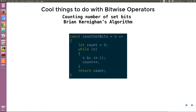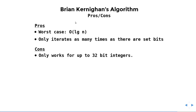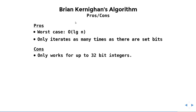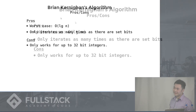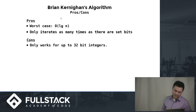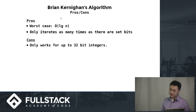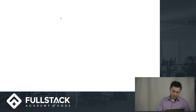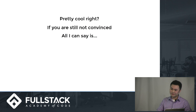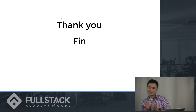So what are the pros and cons of this algorithm? At worst it's O(log N), but typically bit counting is log N since for a number it takes log N bits to represent it, so you only have to count log N. It only iterates as many times as there are set bits, but it only works for up to 32-bit integers. So pretty cool, right? If you're still not convinced, all I can say is: bits, please. Thank you. That concludes my talk.